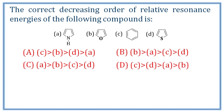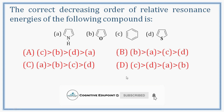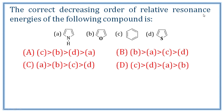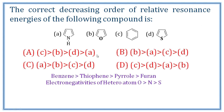The correct decreasing order of relative resonance energies of the following compounds: A) pyrrole, B) furan, C) benzene, D) thiophene. The decreasing order of relative resonance energy is the aromaticity order. Benzene is highly aromatic. Then thiophene, then pyrrole, and last furan. Why? In the heteroatoms, they are highly electronegative and will pull the electrons from the aromatic ring structure. They will be reluctant to donate electrons to the delocalization, reducing aromaticity.